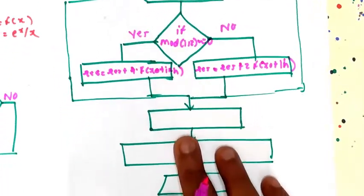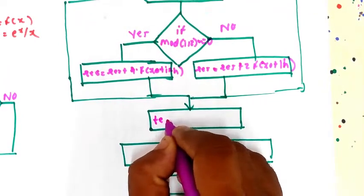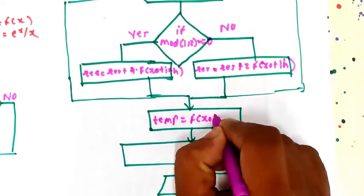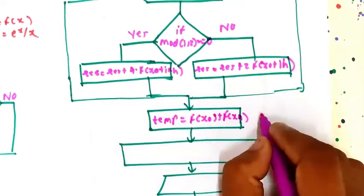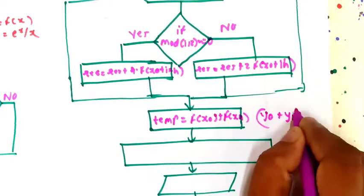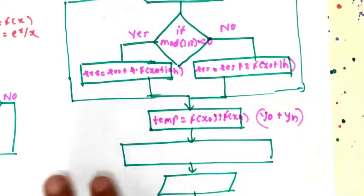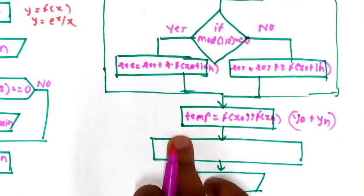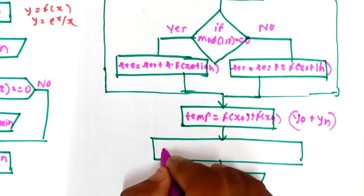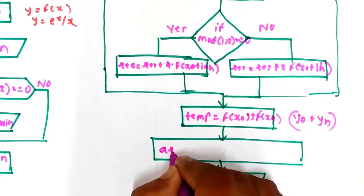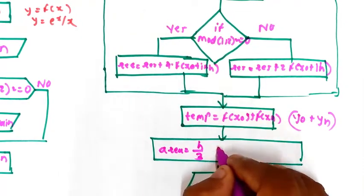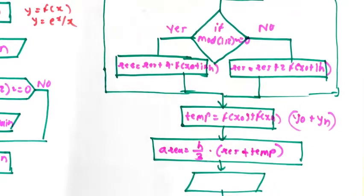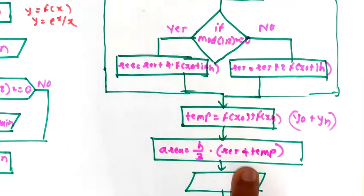Next, I consider a temporary value: temp equals f of x0 plus f of xn, which is nothing but y0 plus yn. Then you find out the area using Simpson's 1/3rd rule: area is equal to h by 3, multiplied by the quantity (result RES plus temp). This is the Simpson's 1/3rd rule formula for the cross-section area.